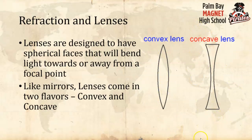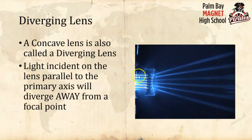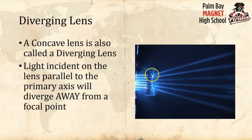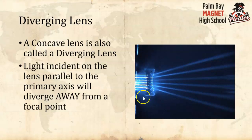A concave lens is also called a diverging lens because as light comes in, all the light waves refract outwards from the focal point. All the light spreads out as it comes through the lens, away from the focal point on the same side. This is the type of lens used for nearsightedness — people who can't see things far away.